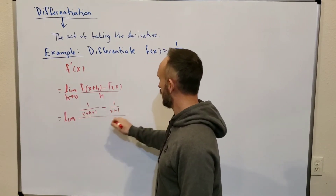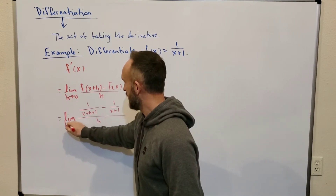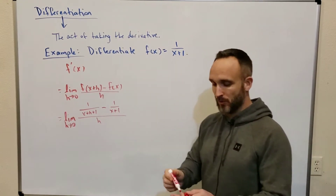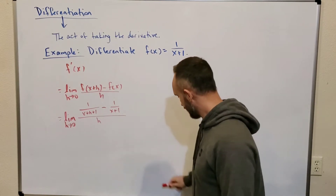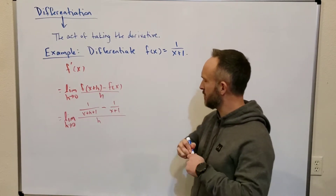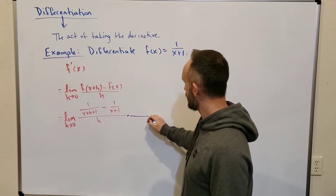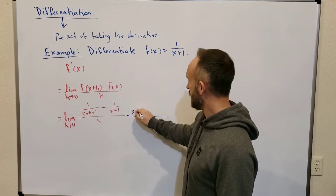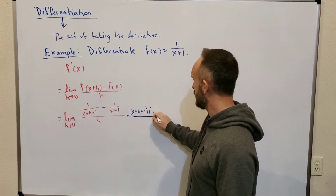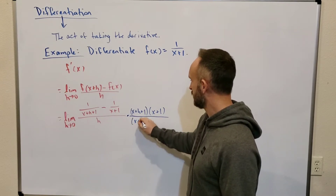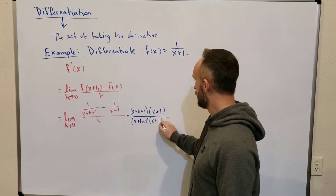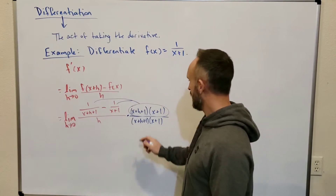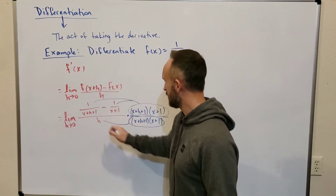And that's all over h. We're trying to take the limit as h goes to 0, which we can't do by direct substitution because we'd be dividing by 0 if we plugged in for h. So we have to clean this complex fraction up. What I would recommend is multiply the big fraction by something that's going to cancel these little denominators — so I'll multiply the top and the bottom by (x+h+1)(x+1).